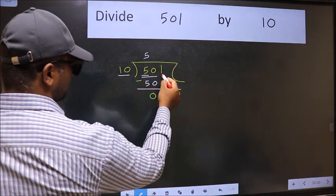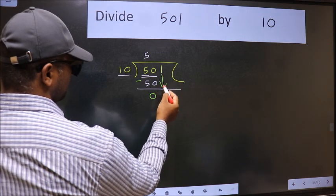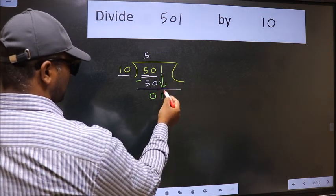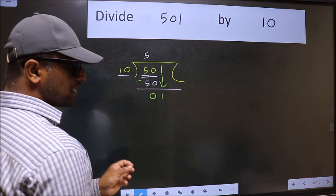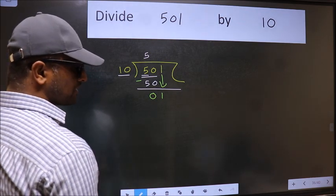After this, bring down the beside number. So, 1 down. After this step, the mistake happens. And the mistake is this.